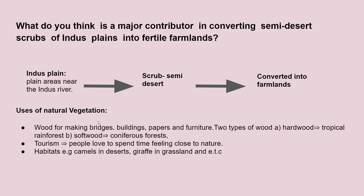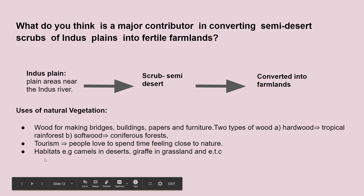The uses of natural vegetation include wood to make bridges, buildings, paper, and furniture. There are two types of wood: hardwood from tropical rainforest and softwood from coniferous forest. Natural vegetations also serve as amazing tourist spots where people can feel close to nature, and they serve as habitats for wildlife.